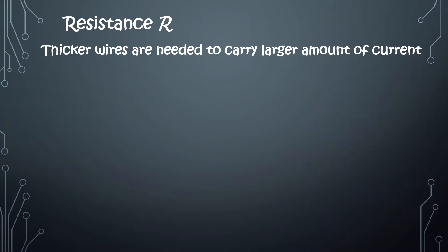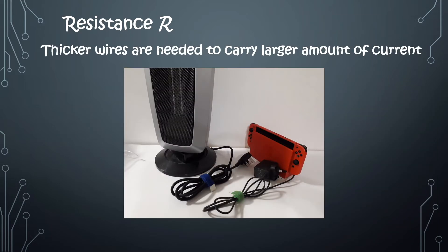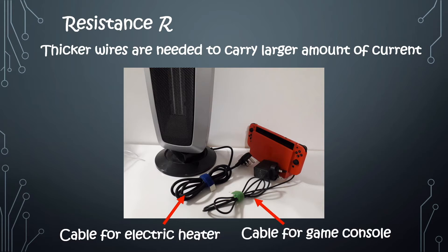This is also the reason why thicker cables are usually used for appliances that draw larger amounts of current, like an electric heater, because thicker wires with larger cross-sectional areas have lower resistance.